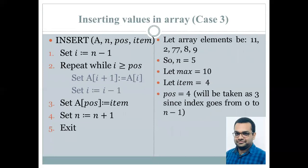So let us assume over here that the array elements are 11, 2, 77, 8 and 9. Now, can you clearly see that yes, elements are not necessarily in any sorted order. However, n is 5. That is the number of elements is 5. And max, we have defined as 10.